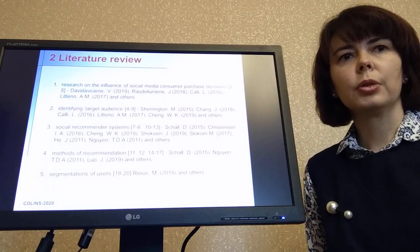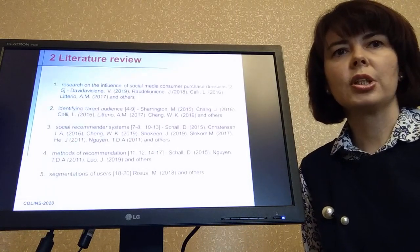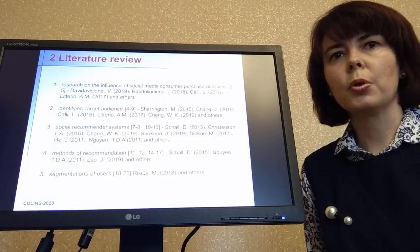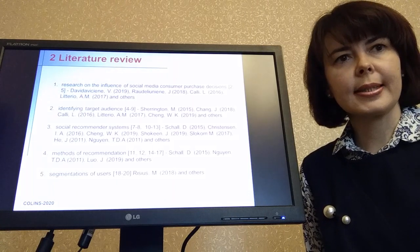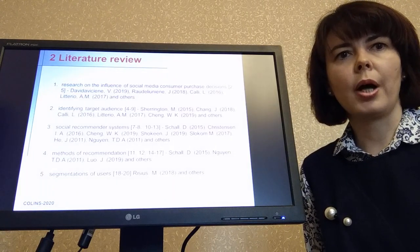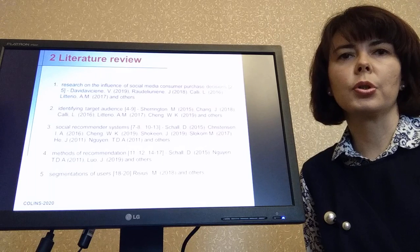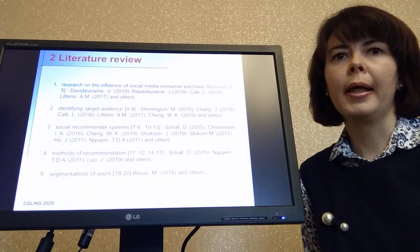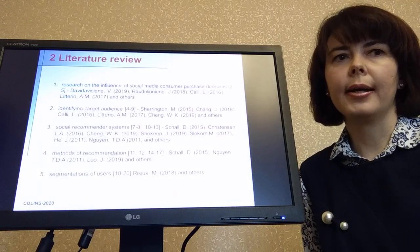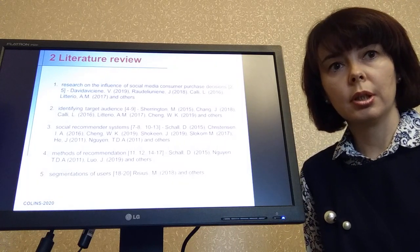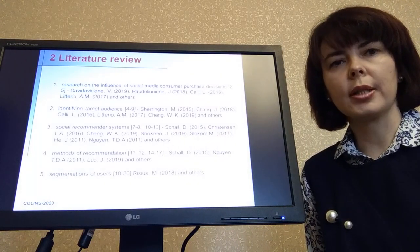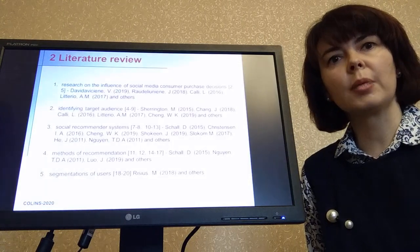For example, in work 7, social networks were studied for tourism. In work 8, for social Internet of Things systems. Scientists have studied various factors influencing shopping on social networks. In work 2, these are age groups. In work 5, this is the identification of influence of active users with subscribers.